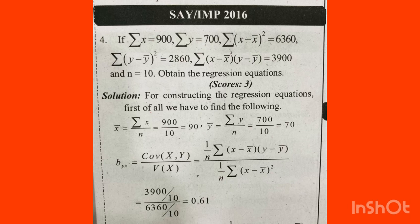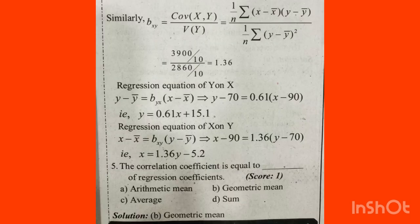Let's take the values and apply them directly. We apply 3900 divided by 10, divided by 6360 divided by 10, giving byx equals 0.61. For bxy, we apply the covariance of x and y divided by variance of x. Then we apply the regression equation of y on x: y minus ȳ equals byx into (x minus x̄).